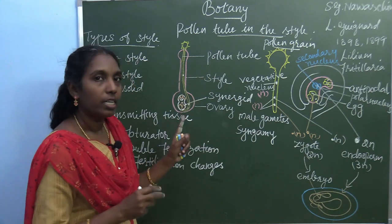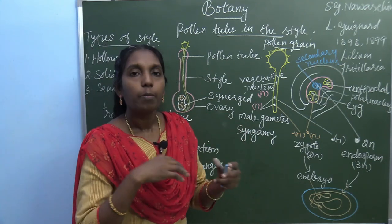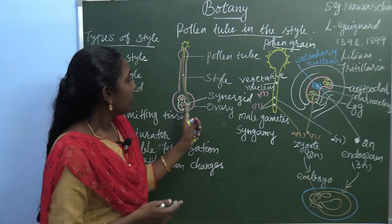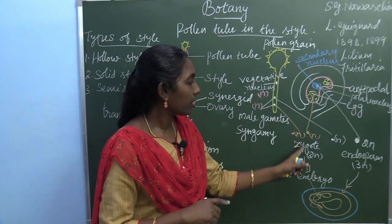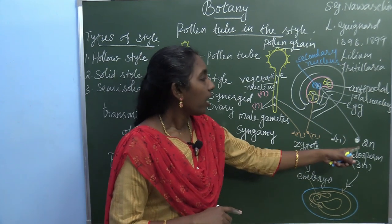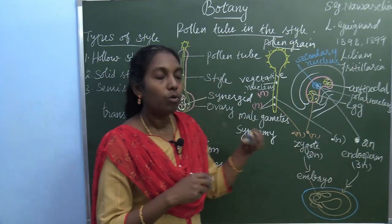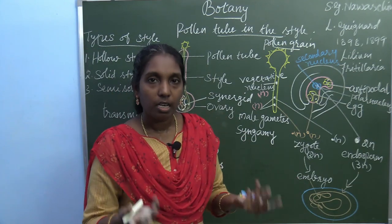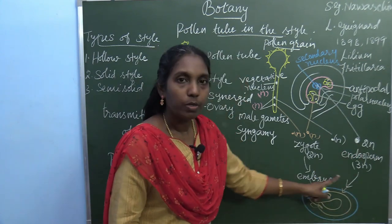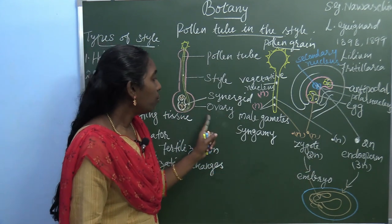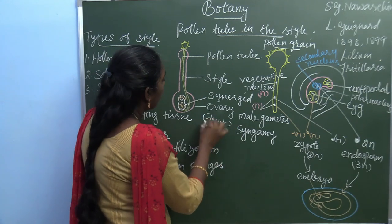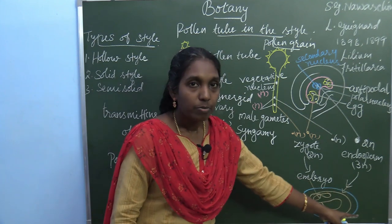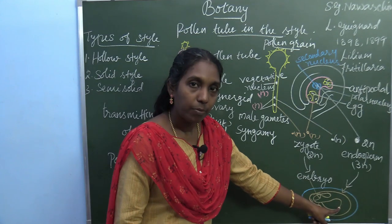The micropyle of the ovule becomes the micropyle of the seed, to facilitate oxygen and water uptake. The egg changes into a zygote, and the zygote develops into the embryo. The secondary nucleus forms the endosperm. The ovary becomes the fruit and the ovule becomes the seed. The embryo develops inside the endosperm, so the endosperm is the nutritive tissue of the developing embryo.